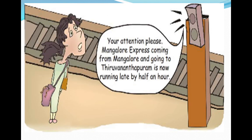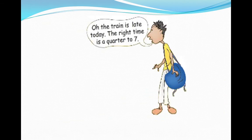From this picture you can see this is a picture of a railway station, and you can see that there are railway rules there. Here is an announcement, and there is a lady whose face shows she is worried. But why is she worried? Look at here what is the announcement: Attention please! Mangalore Express coming from Mangalore and going to Thiruvananthapuram is now running late by half an hour. That lady is worried because the train is late. The second picture shows a boy thinking that the train is late today — the ride time is quarter to seven. So dear students, find out what is the exact time at quarter to seven, and write the answer in your notebook. This is also your homework.